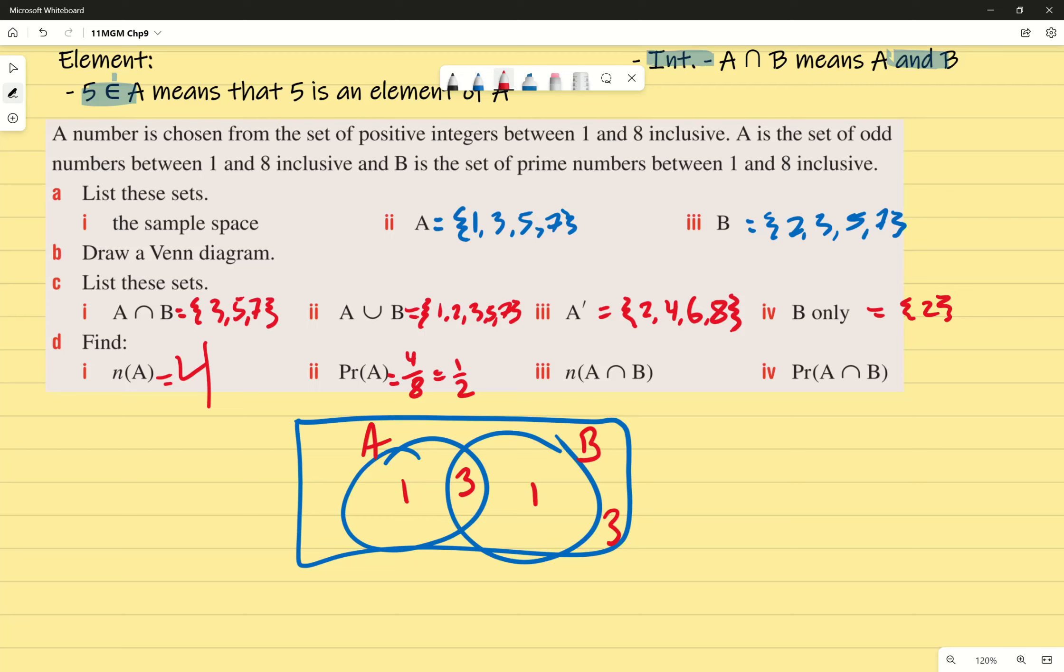The number of numbers in A intersection B, do I have to go do a bunch of math for this one? What's the number? It's just three, because it's overlapping. And the probability of A intersection B, we know now is three over the total of eight. Pretty straightforward. Regardless, I want to ask you to do some practice. So exercise 9c, questions on page 583. Thank you.